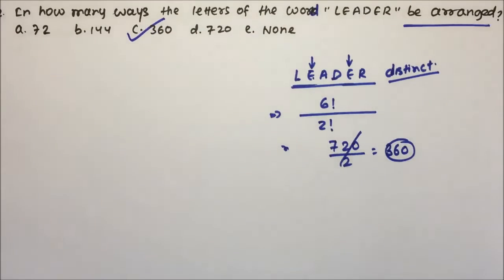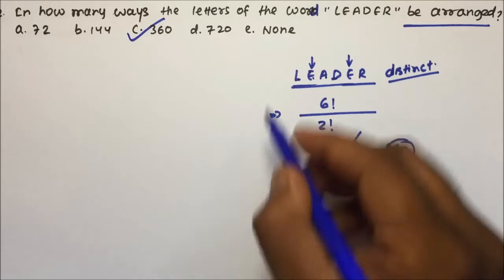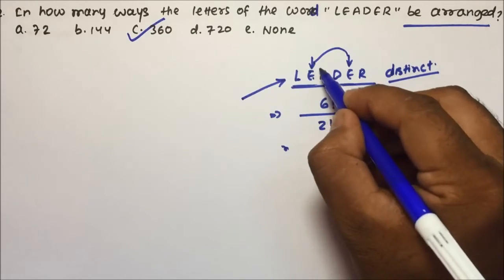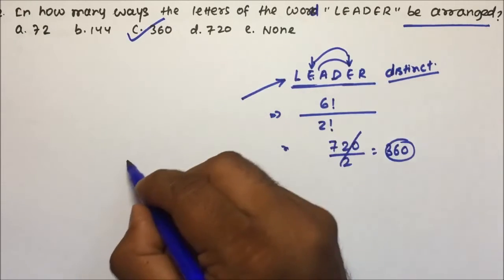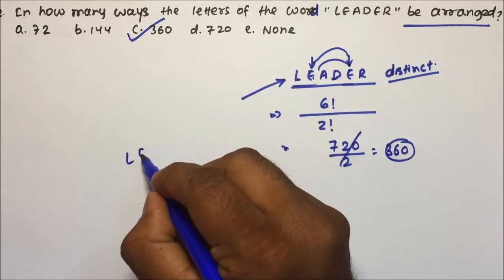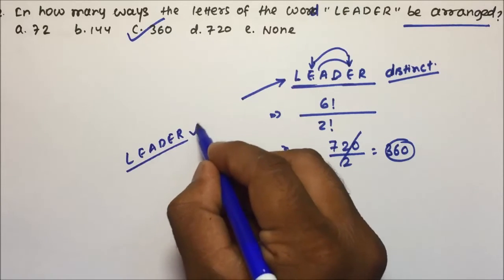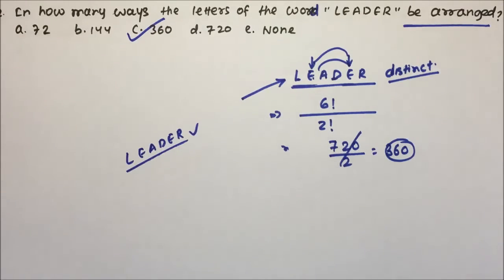So there are 360 ways in which the letters of the word LEADER can be arranged. The reason we divide by 2 is that if you interchange the two E's, you still get the same word — so those arrangements are not truly different. That is why we divide by 2 factorial.